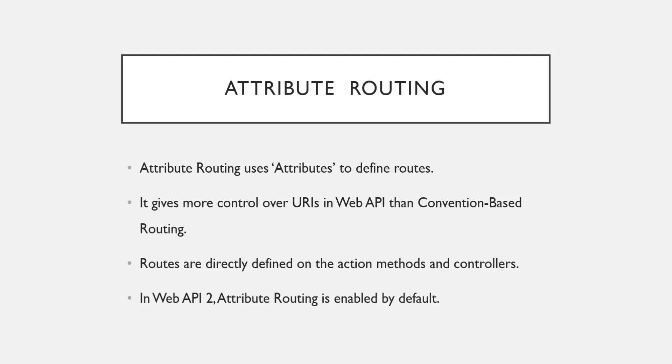The advantage of using attribute routing is that it gives you more control over the URI in Web API than convention-based routing. We can define the routes directly on the action methods and controller. In Web API 2, attribute routing is enabled by default; otherwise you have to write code to enable it. Let's see all these things practically in Visual Studio.